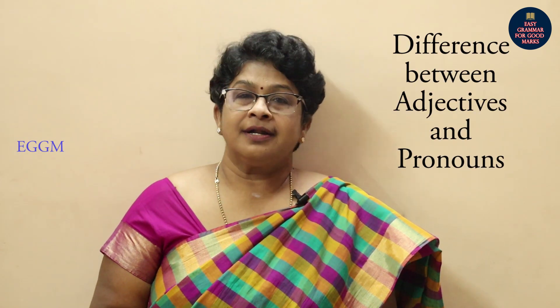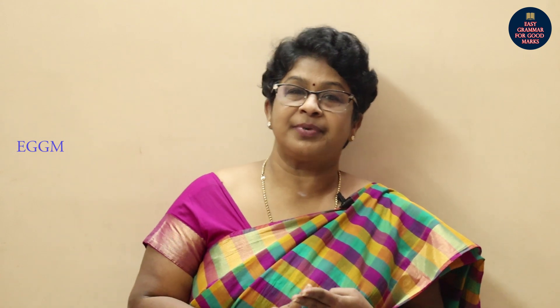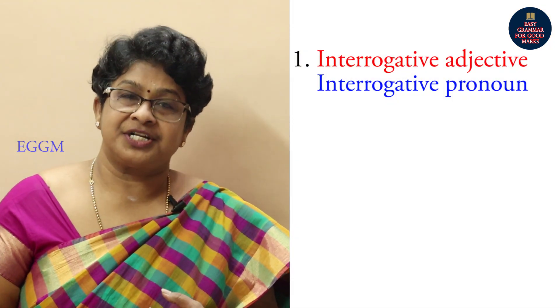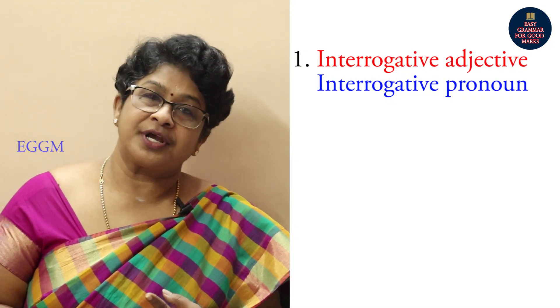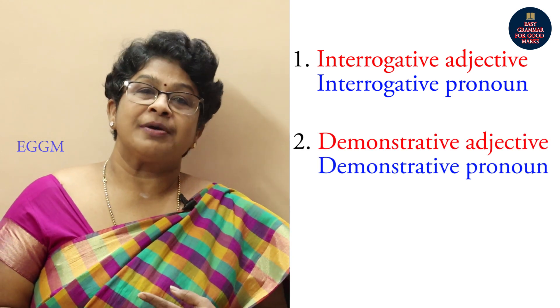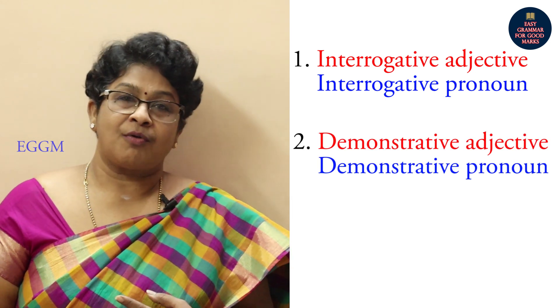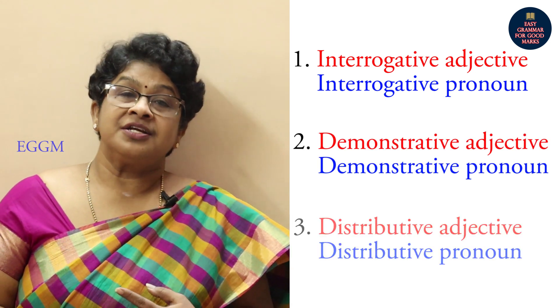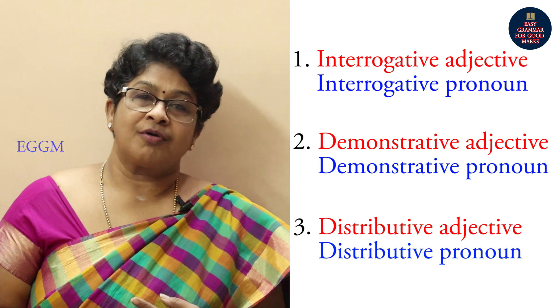The topic is the difference between adjective and pronoun. The kinds we will look at are three pairs: interrogative adjective and interrogative pronoun, demonstrative adjective and demonstrative pronoun, and distributive adjective and distributive pronoun.